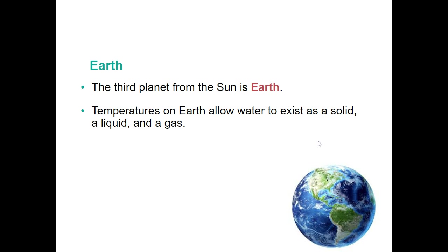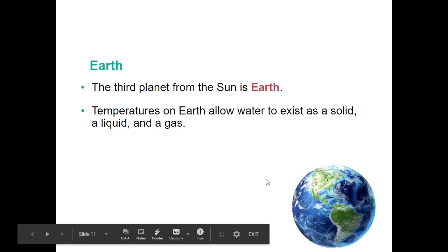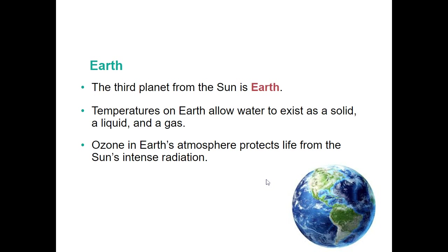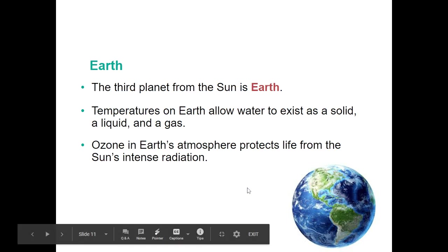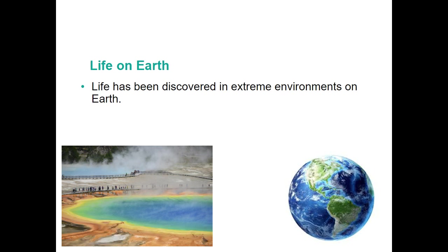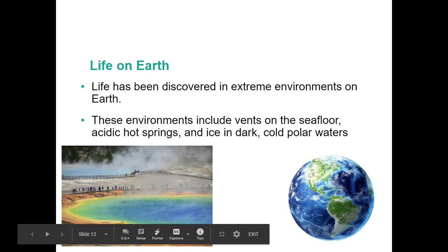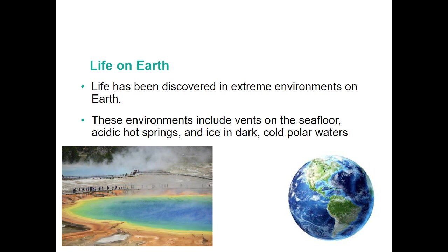The third planet from the sun is Earth, which we'll go into much more over the next few chapters. Temperatures allow for liquid water, solid water, and water vapor — the only place in our solar system where we know this is possible. It's ironic that we're called Earth when we're mostly water. The ozone layer protects life from the sun's harmful rays, and the magnetosphere also protects us from solar radiation. Earth is the only planet where life has been discovered, and it supports many environments, from tundra to rainforest to deep-sea hydrothermal vents.